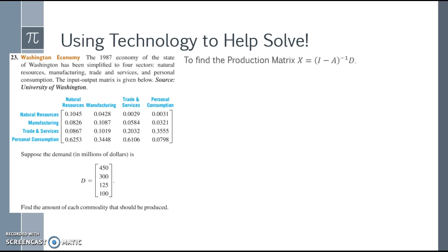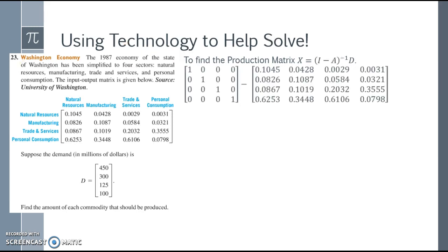To find the production matrices, we need to take the identity matrix minus our given information, find the inverse of that, and then multiply by the demand. So let's look at the identity matrix minus the matrix that we're given. Remember our identity matrix is zeros with ones along the diagonal.